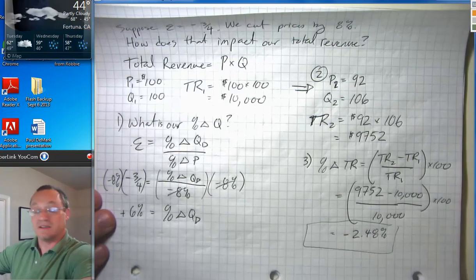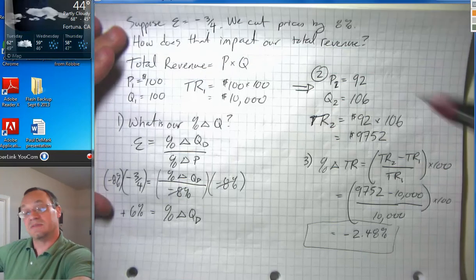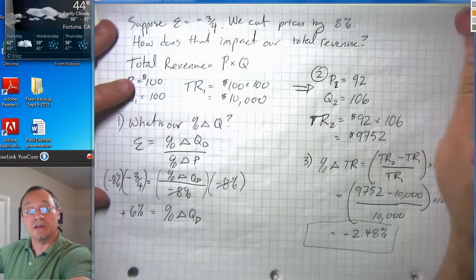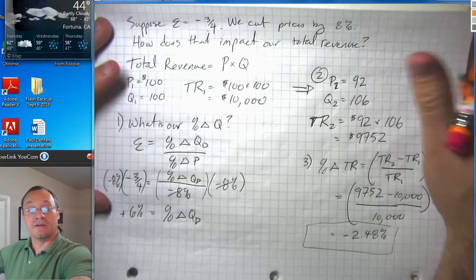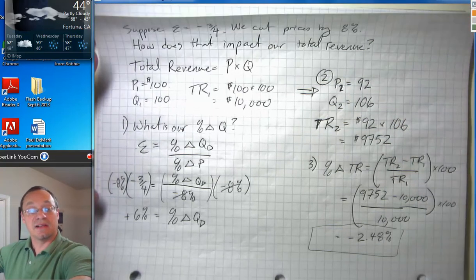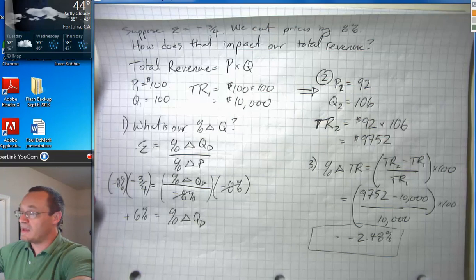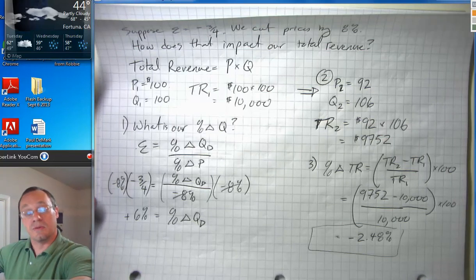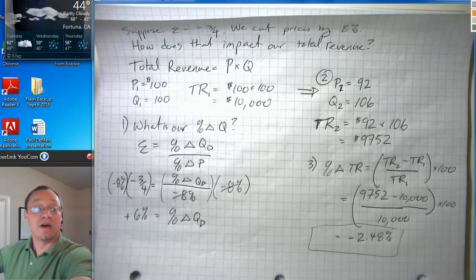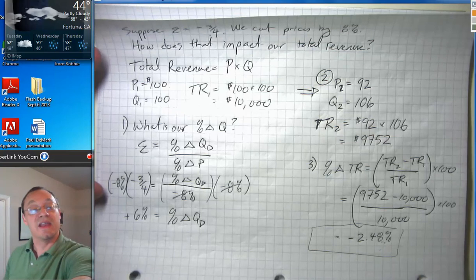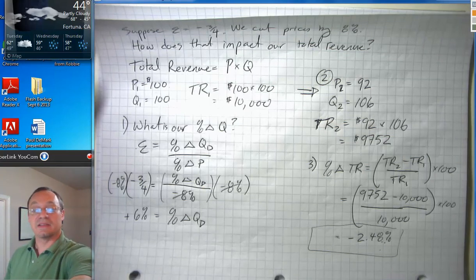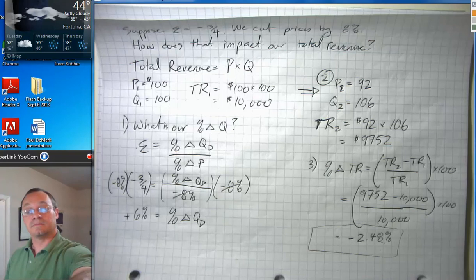And does this make sense? Well, we cut our prices by eight percent and we sold six percent more. And just at the intuitive level, if I'm getting eight percent less money for each unit and I'm only selling six percent more units, then from a total revenue point of view, I'm worse off. So, that checks out with the fact that we have a negative percentage change here. And that's my last example. Thank you.